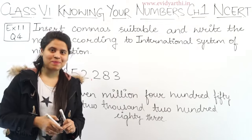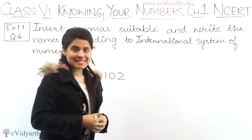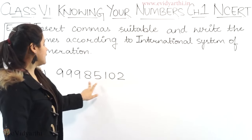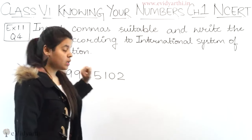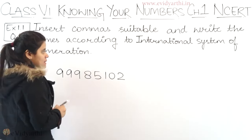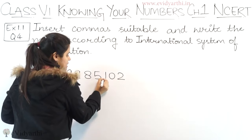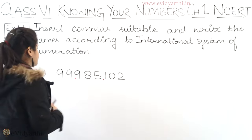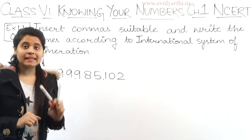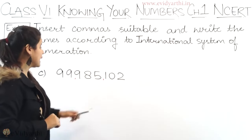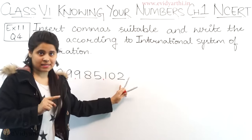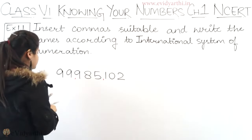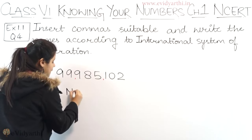Now coming to part C. The number in part C is 99,985,102. Again, we put the commas first — 3 digits, then again 3 digits. The first number we have is 99, and after 99 there are 6 digits. 6 digits means million. So this will become 99 million.